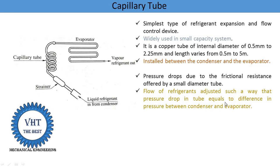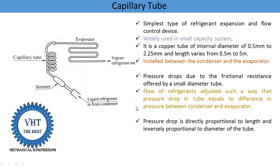The flow of refrigerant is such that the pressure drop inside the capillary tube equals the pressure difference between the condenser and evaporator. This pressure drop is directly proportional to the length — if we increase the length of the capillary tube, pressure drop increases. The pressure drop is inversely proportional to the diameter of the capillary tube — if we increase the diameter, pressure drop is reduced.